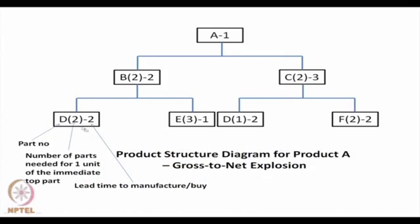Let us revise this case once again. The case is illustrated in the form of a product structure diagram. Suppose the assembly A requires 1 day to assemble components B and C, and it requires 2 items of B and 2 items of C. To make B requires a lead time of 2 days and C requires 3 days. B in turn requires 2 items of D and 3 items of E, with D requiring 2 days and E requiring 1 day. Similarly, C requires D and F with the number of parts and lead times mentioned. This is called a product structure diagram.